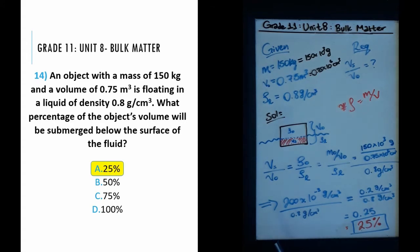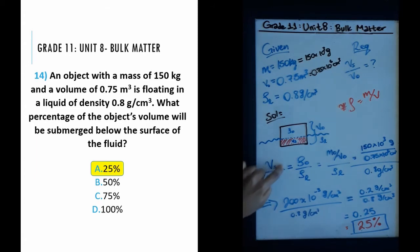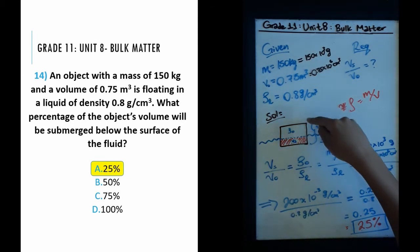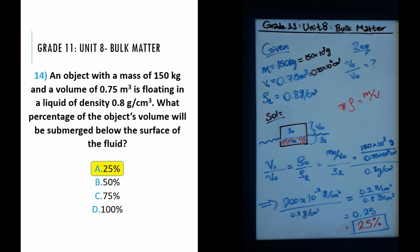The answer is 0.25 or 25%, depending on the choice format. Since the question asks for a percentage, the answer is 25% — that's choice A. To understand this: 25% of the object is underwater and the remaining 75% is above water. This formula comes from Archimedes' principle about buoyancy — there's a great video on the Organic Chemistry Tutor YouTube channel explaining it.